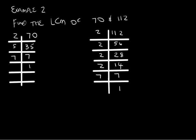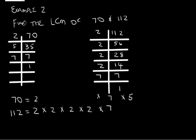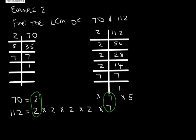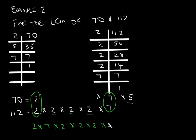Let's find the LCM of 70 and 112. We write each as the product of prime factors using the ladder method. So 70 is equal to 2 times 7 times 5, and 112 is equal to 2 times 2 times 2 times 2 times 7. We circle the pairs — 2 and 7 — and write each pair down once. Then we include the singles: 2, 2, 2 and 5. So we multiply 2 times 7 times 2 times 2 times 2 times 2 times 5, which equals 560. That's the LCM of 70 and 112.